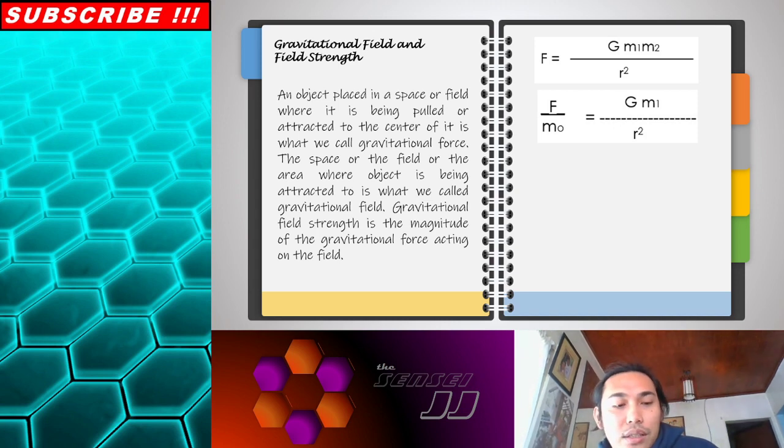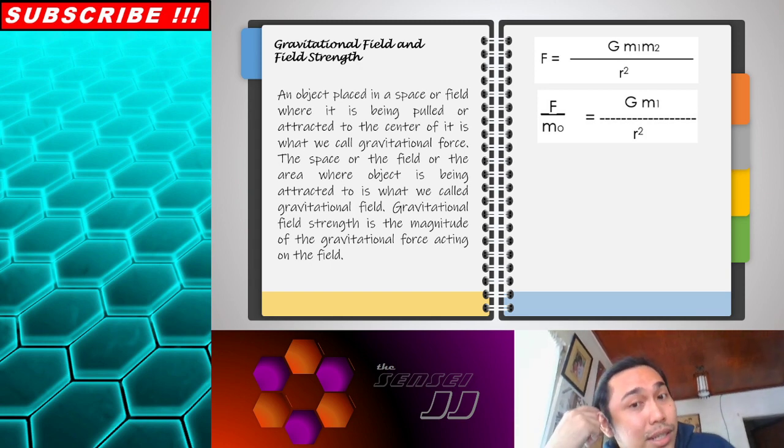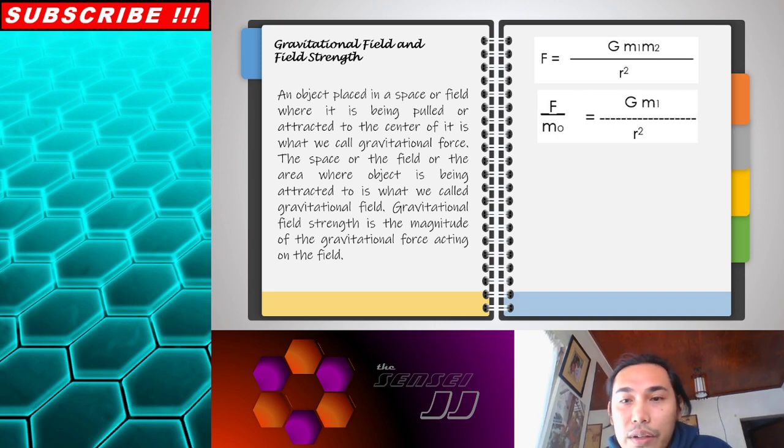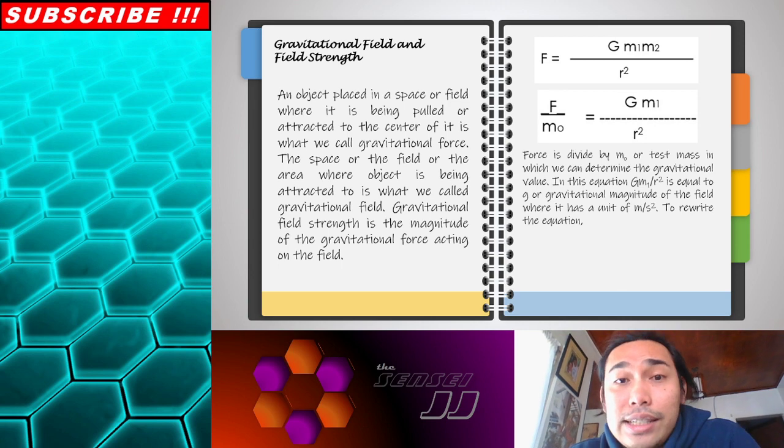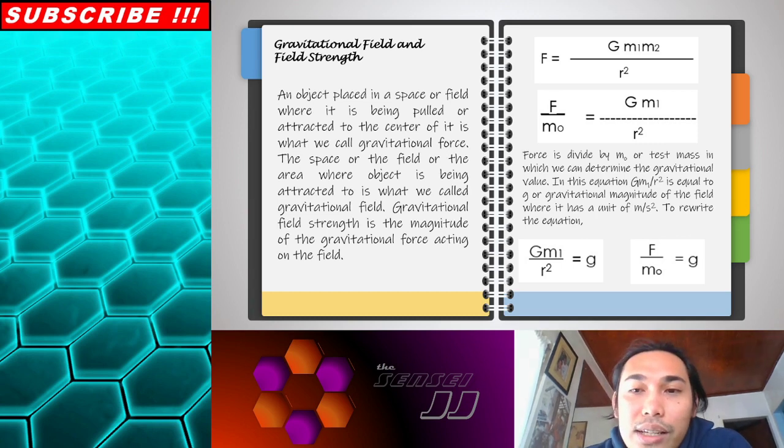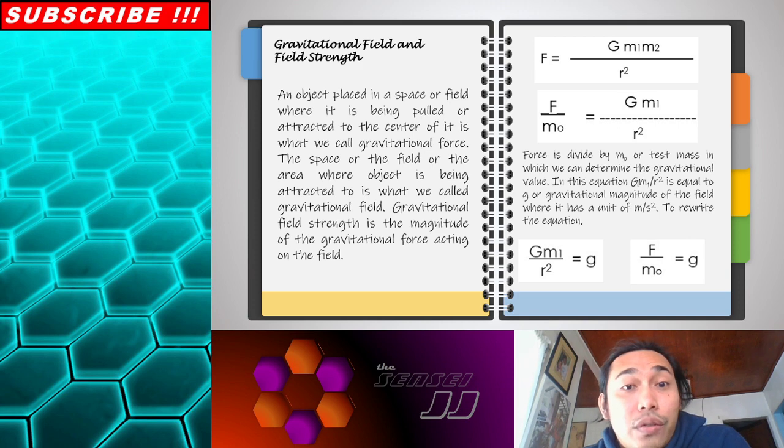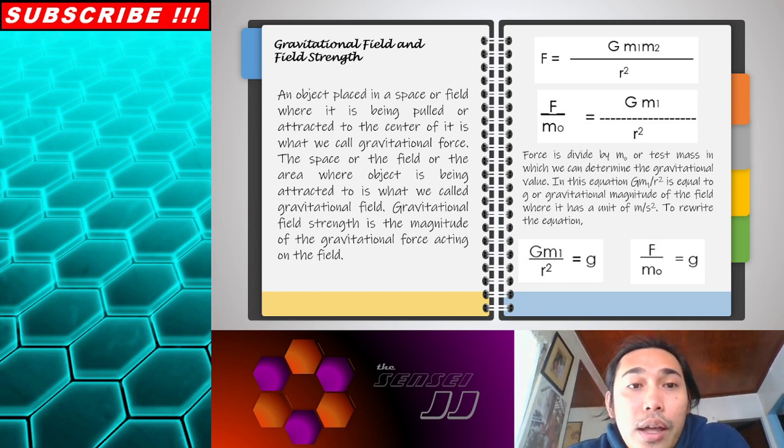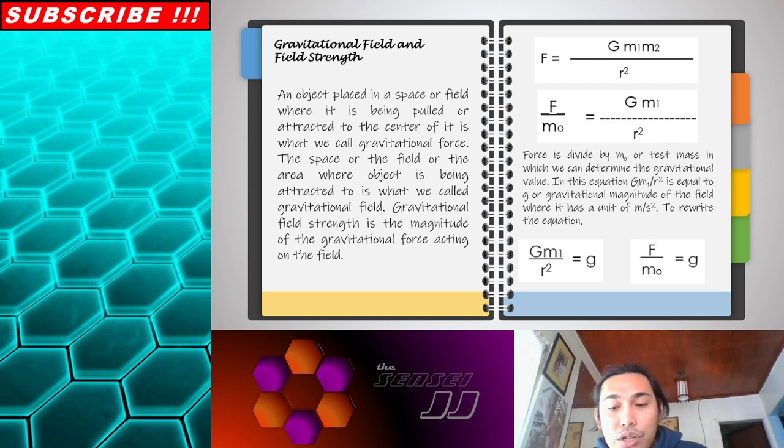Here we have the gravitational field formula - F equals G M1 M2 over R squared. It's the same as before, but the gravitational field strength is divided by our test mass, or our M0. The formula here is this: the small letter g is what we call the gravitational magnitude of the field. It is given as the force per mass. That is our gravitational magnitude. In a given mass, there's a certain force given, a certain force active in our gravitational field.